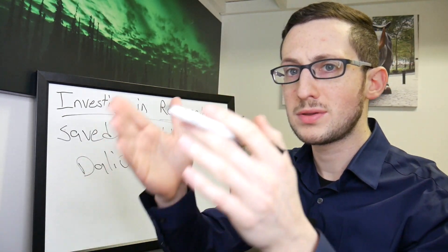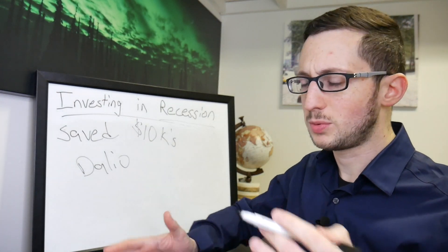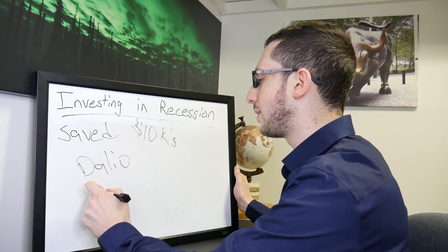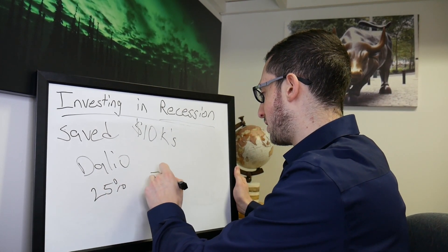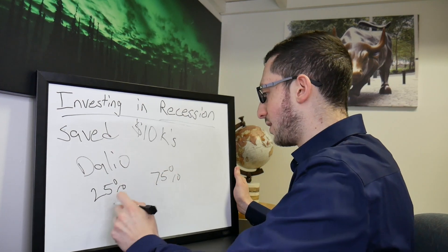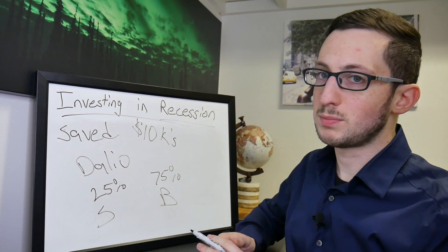Because when something else is down that means something else could be up. For our personal example I was helping my dad out with his portfolio and everything. So we ended up having his allocation 25% in stocks, 75% in bonds.